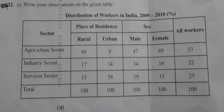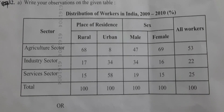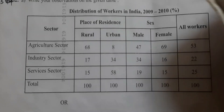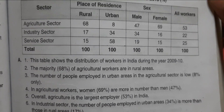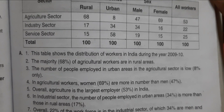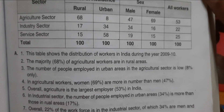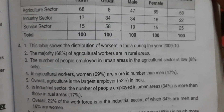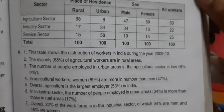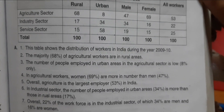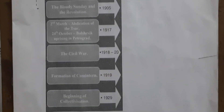Question 32A: Write your observations on the table showing distribution of workers in India in 2009–2010. The majority — 68% — of agricultural workers are in rural areas. The number of people employed in the agricultural sector in urban areas is low at 8%. The majority — 79% — of total workers are in rural areas.